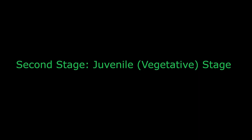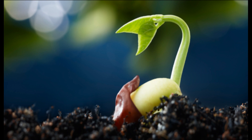Second stage: juvenile, vegetative stage. The juvenile stage starts with germination. Seeds need the proper temperature, moisture, air, and light conditions to germinate. When a seed starts to germinate, the protective coat breaks open, and the first root and shoot emerge. The root grows down into the soil to take up water and nutrients, and also begins to anchor the plant in the soil. The shoot starts to grow towards the light. This process is fueled by the energy reserves of the seed.